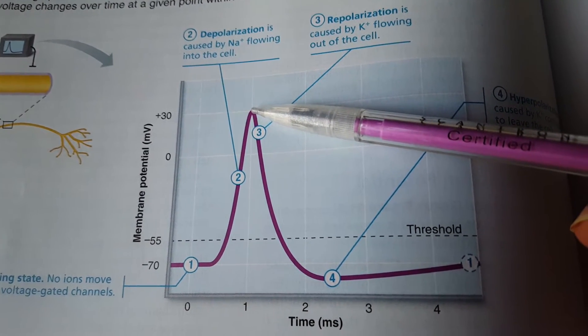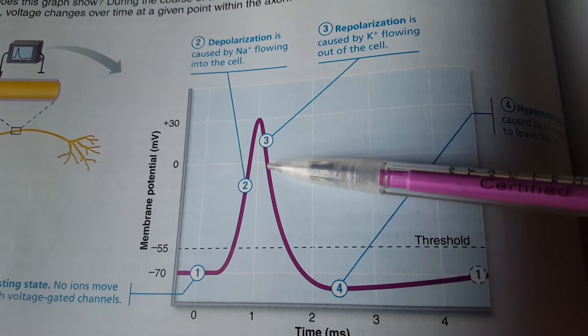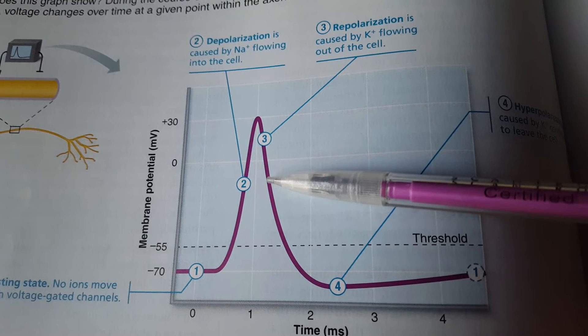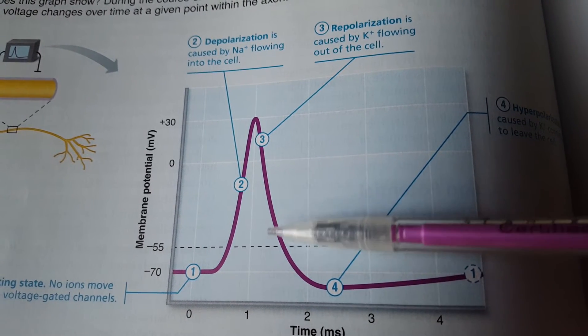Potassium, remember there's more potassium on the inside, so it's going to diffuse down its concentration gradient through its voltage-gated channel out of the cell, taking its positive charge with it. So if we take positivity away, we become more negative.